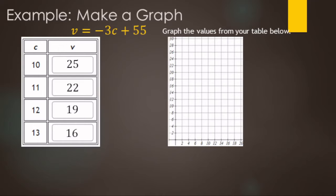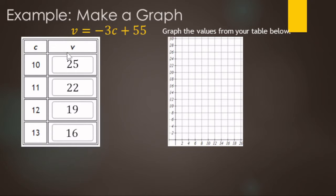If you know the shortcut for graphing, you can use that, but here we'll use the values from the table for 10, 11, 12, and 13. The C axis is the horizontal axis — always x, or independent. So for (10, 25), we find 10 on the horizontal axis and 25 on the vertical axis, and plot a point where they intersect.